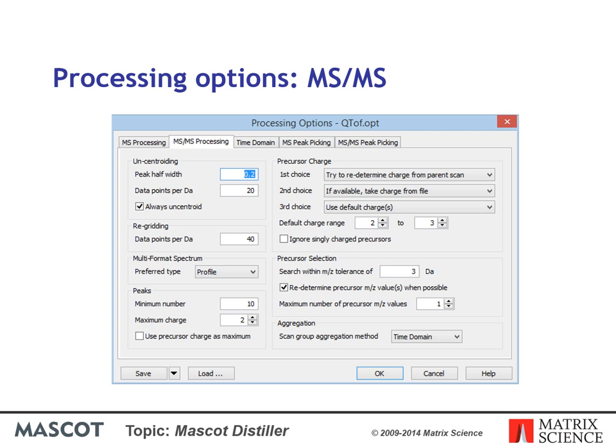Maximum charge state for fragments can be specified or set to the precursor charge. For creating a peak list for a Mascot search, the correct setting depends on whether you are outputting MSMS peaks as M/Z or MH+ values. A conventional peak list contains M/Z values and the maximum charge state that Mascot looks for is 2+, so there is no point in spending time looking for higher charge states. However, if your data definitely includes fragment ions with higher charge states, you should choose to output fragment ions as MH+ values and check 'use precursor charge as maximum'.